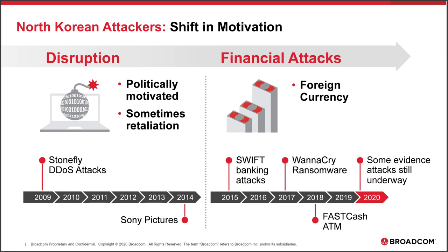Interestingly, they probably would have stolen more from the Bangladesh Bank, but they were interrupted because poor spelling on one payment instruction raised suspicions. While the Bangladesh Bank strike was the biggest, the next venture into cybercrime was less successful. WannaCry was pretty clever in the way it paired with the EternalBlue exploit to create something so rapidly self-propagating, but this innovation was hampered by poor execution.